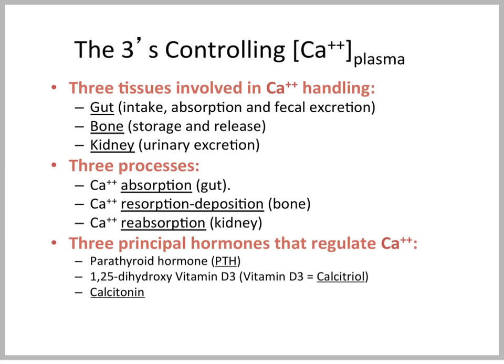In this slide, we have an overview of everything we're going to talk about — sort of the rule of threes. There are three tissues involved in calcium handling: the gut, the bone, and the kidney. The gut is involved in intake, absorption, and excretion of calcium. Bone stores it and releases it as the animal needs it. And the kidney can excrete calcium. There are three basic processes at each of these tissues: calcium is absorbed in the gut; in the bone, we have both resorption and deposition of calcium.